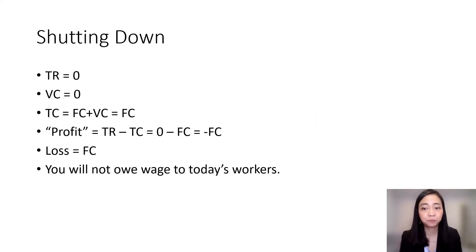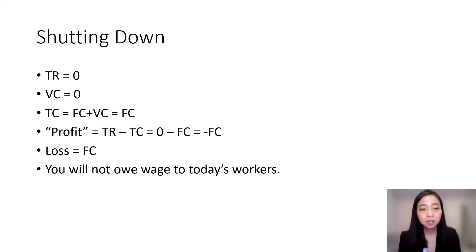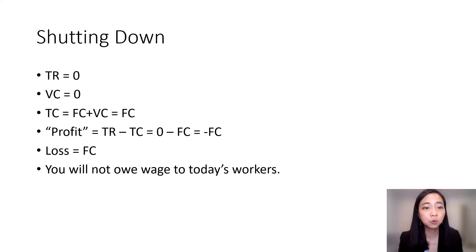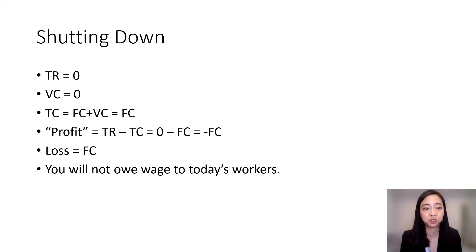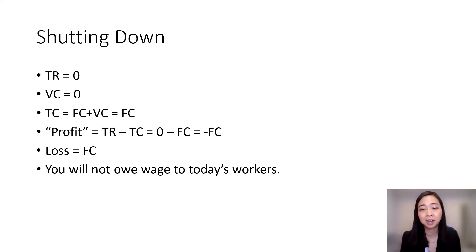Here is what happens when your firm shuts down. Your total revenue is zero. Your variable cost is also zero. Now your total cost is equal to fixed cost plus variable cost, and variable cost is zero. So your total cost is just fixed cost. And therefore, your profit is equal to total revenue minus total cost, which is zero minus fixed cost.